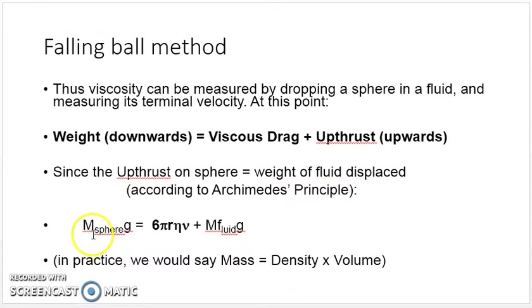We can say that M_sphere × g = 6πrηv + M_fluid × g. In practice, we would say mass equals density times volume.